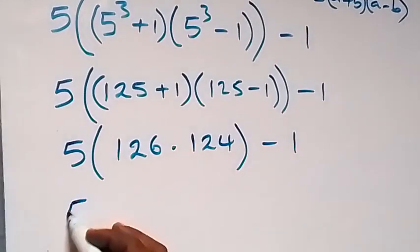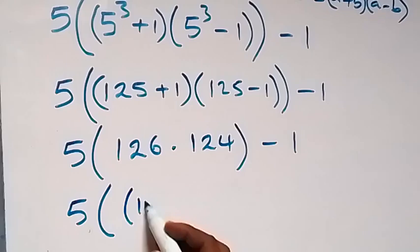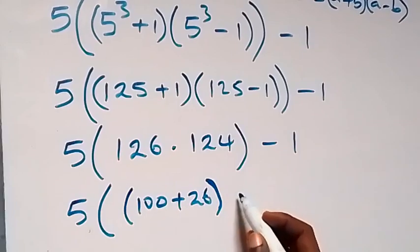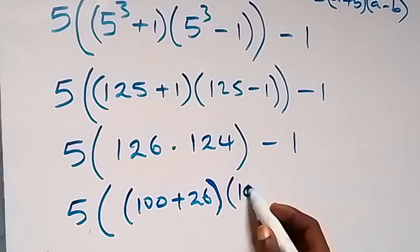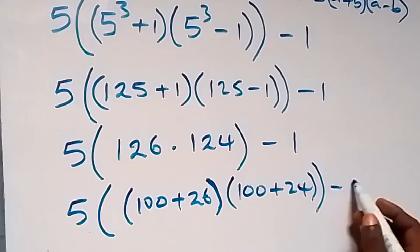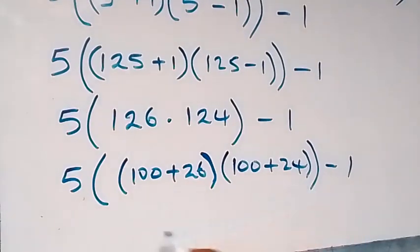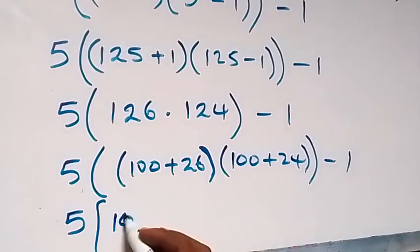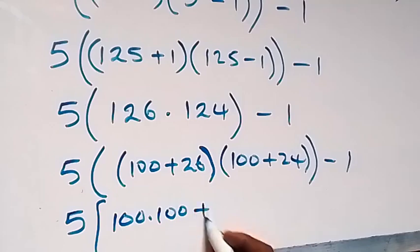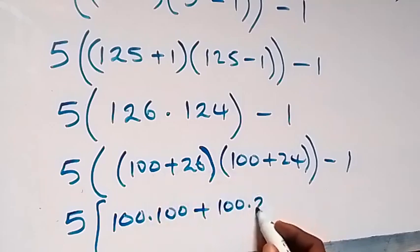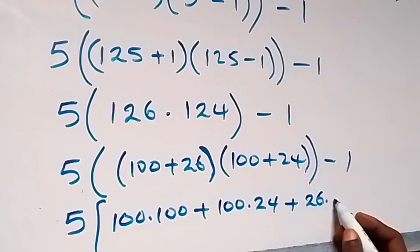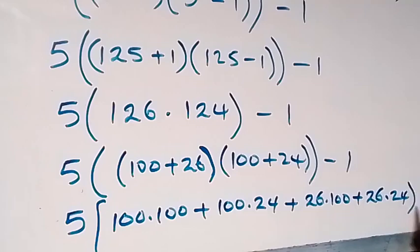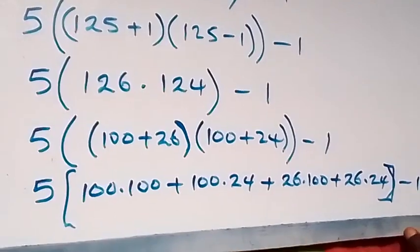And also, we can write this as 5 into bracket. Here we can write 126 times 124. We can expand 126 as 100 plus 26, and 124 as 100 plus 24. So we have 5 into bracket: 100 times 100, plus 26 times 100, plus 26 times 24. Then close bracket, then minus 1.